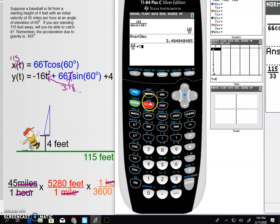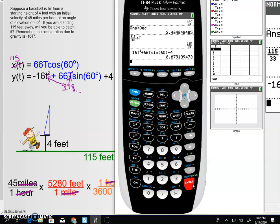And let's just type this in and see. Negative 16t squared plus 66t times the sine of 60 plus 4. And that tells me that the ball is now about 8.9 feet high.